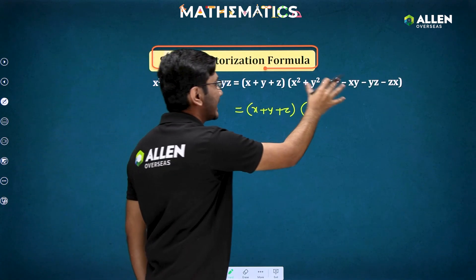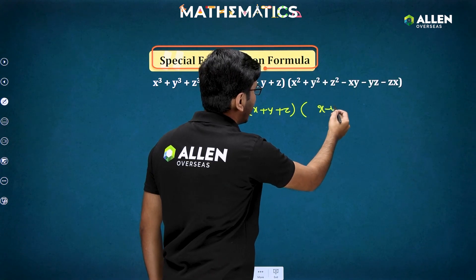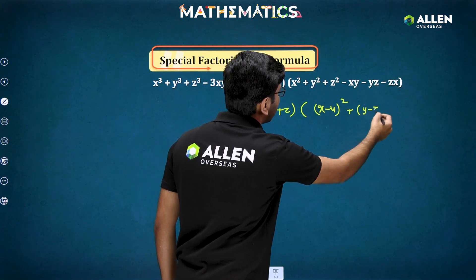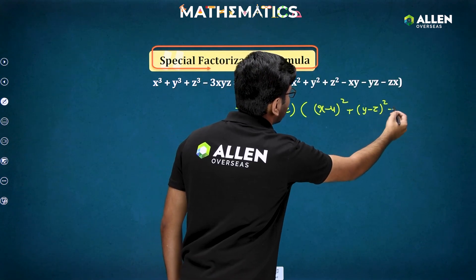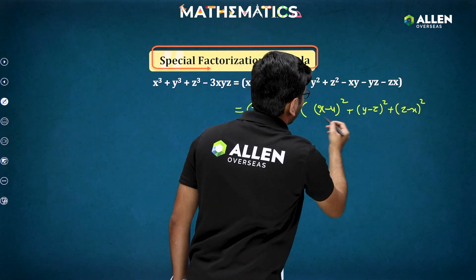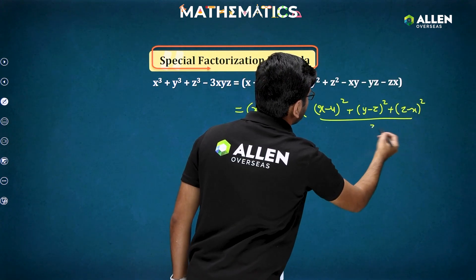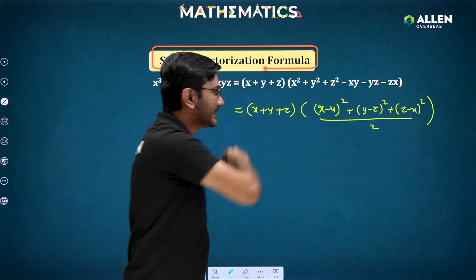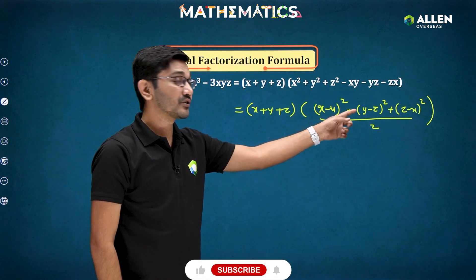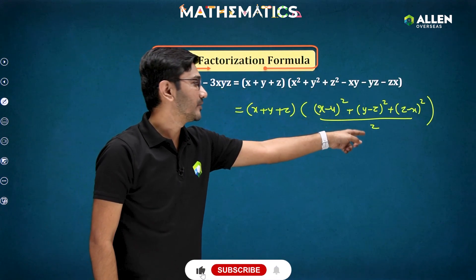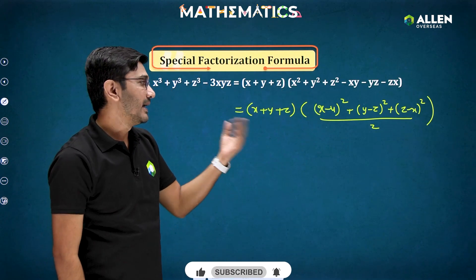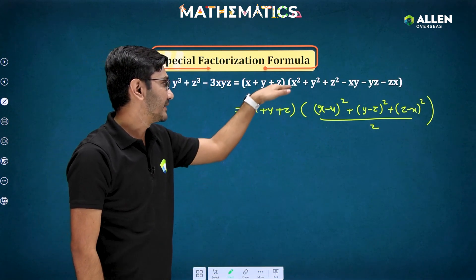This second factor can also be written as [(x − y)² + (y − z)² + (z − x)²] / 2. When you solve this out, you get 2x² divided by 2, giving x², and every term matches with that bracket.